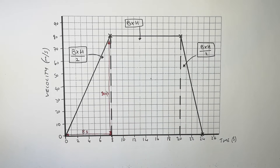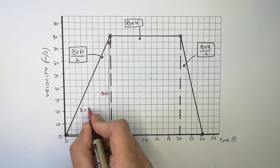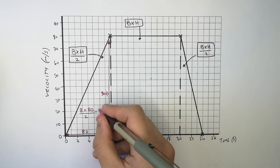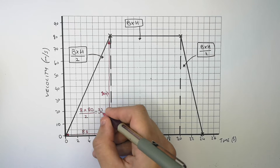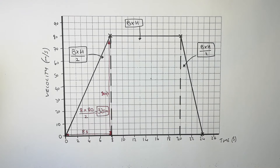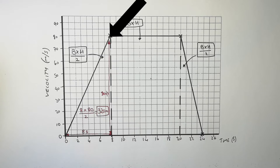Now you've got the base and the height, you simply do base of eight times height of 80, divide it by two, and that gives you a distance of 320 metres. The car travelled 320 metres in the eight seconds while it accelerated from zero metres per second to 80 metres per second.